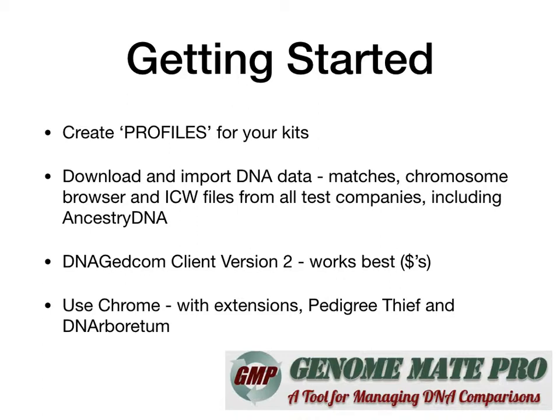The biggest challenge when you start out is to create profiles for your kits and download and import all the DNA data — this can take a very, very long time. It works best if you use a DNA GEDCOM connection client, which costs $5 a month, but you can pay $5, use it for one month, and then stop your subscription. There are also a lot of Chrome extensions that are useful for pedigrees and it works best with Chrome. Once you've done all that, you'll be able to use the information to analyse your results, though it will take a long time to start out and a lot of people give up before that.